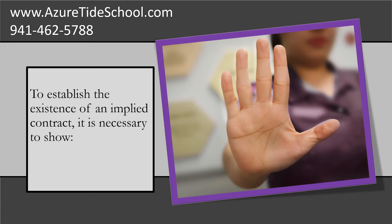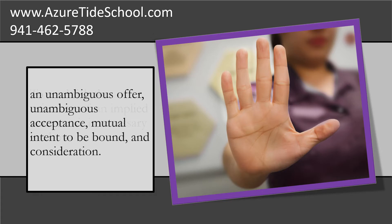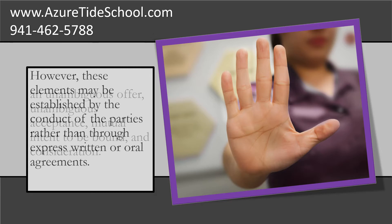To establish the existence of an implied contract, it is necessary to show an unambiguous offer, an unambiguous acceptance, mutual intent to be bound, and consideration. However, these elements may be established by the conduct of the parties rather than through expressed written or oral agreements.